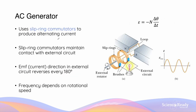In an AC generator, the coils are connected to slip ring commutators. The two ends of the coil are connected to a different slip ring commutator, and each slip ring is connected to the external circuit via a brush. The external circuit will then use the electrical energy produced by the generator. Unlike split ring commutators, slip ring commutators are always in contact with the corresponding brushes throughout the whole rotation of the coil. This setup allows the current produced to be an alternating current whose direction reverses every time the coil is made to rotate 180 degrees, that is half a revolution.